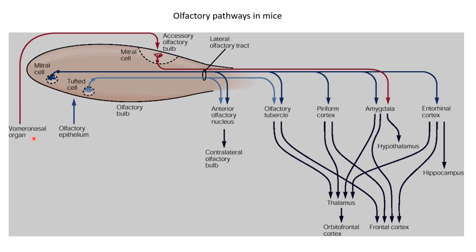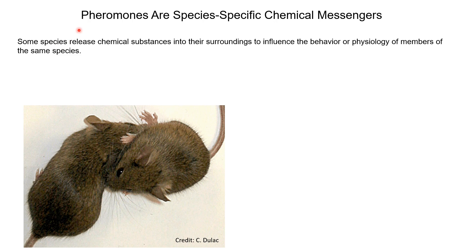In mice there is also an additional sensory organ known as the vomeronasal organ, in addition to the olfactory epithelium. The sensory neurons from the vomeronasal organ go to a region called the accessory olfactory bulb — like the olfactory bulb but receiving input only from the vomeronasal organ. The vomeronasal organ also expresses olfactory sensory neurons containing olfactory receptors, but these receptors are specialized for detecting pheromones. Pheromones are chemicals used by a member of a species to communicate with other members of the same species, present on their body or released into the environment.